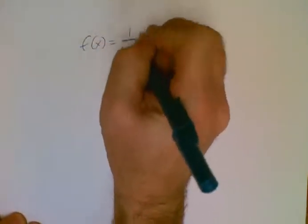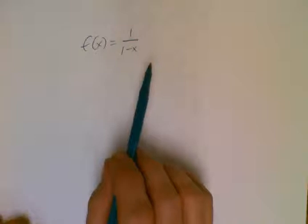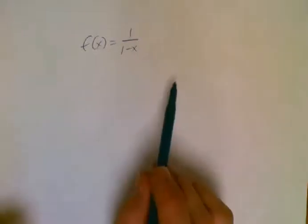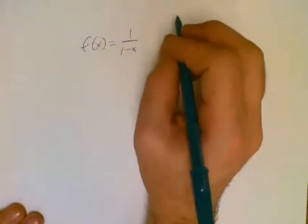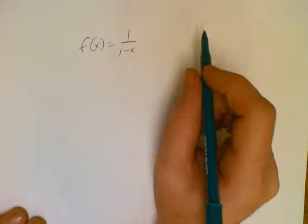We already did this last week when we were just doing basic power series representation, but I want to put it into Maclaurin form, or I want to at least show you where the form came from.